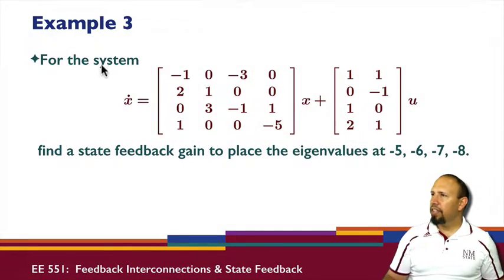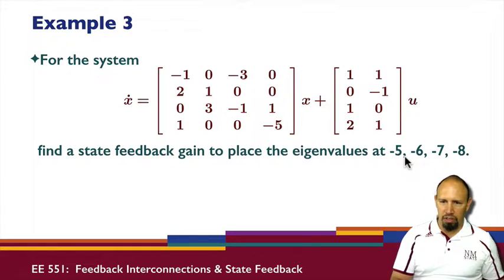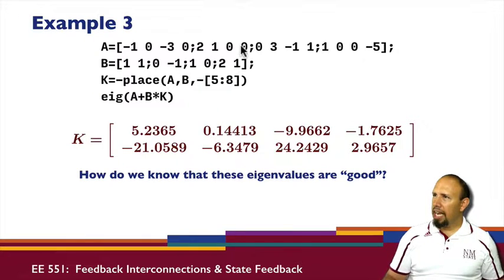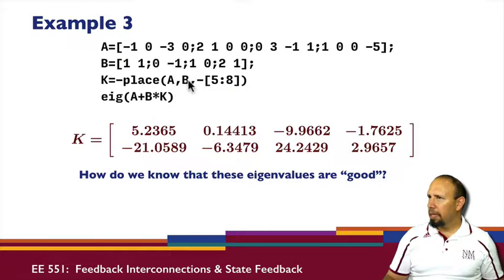For example three, here I have this system and I have two inputs. I want to find a state feedback gain that will place the eigenvalues at these values. Here's my MATLAB command for that. Here's my A, B. I can use the place command, so notice I'm using minus place because I want a plus sign here. I set the eigenvalues to be what I want, and so that gives me a K. This command shows me that I in fact get the eigenvalues I expect. Here's the K it gives me those eigenvalues.